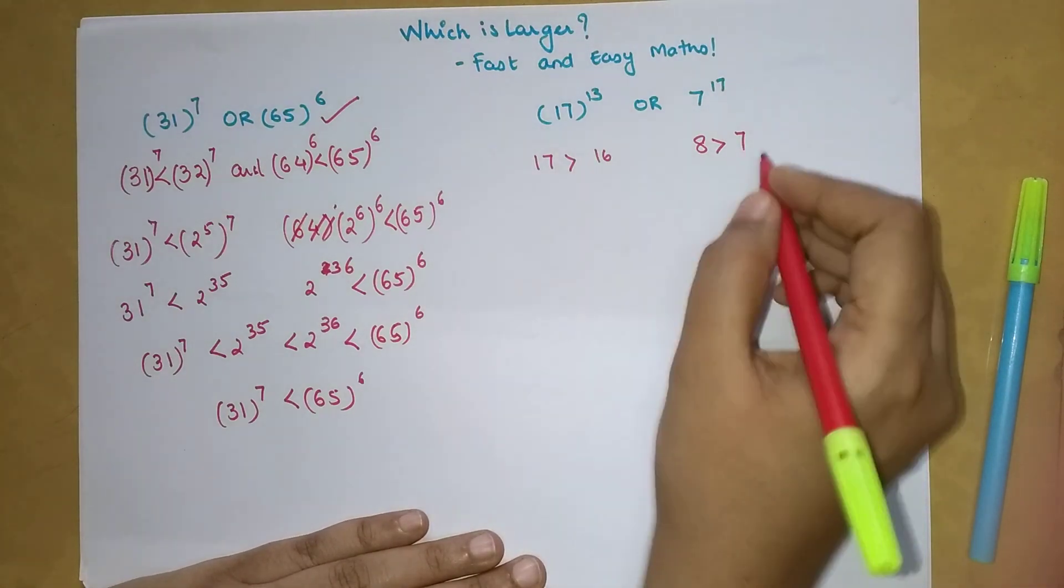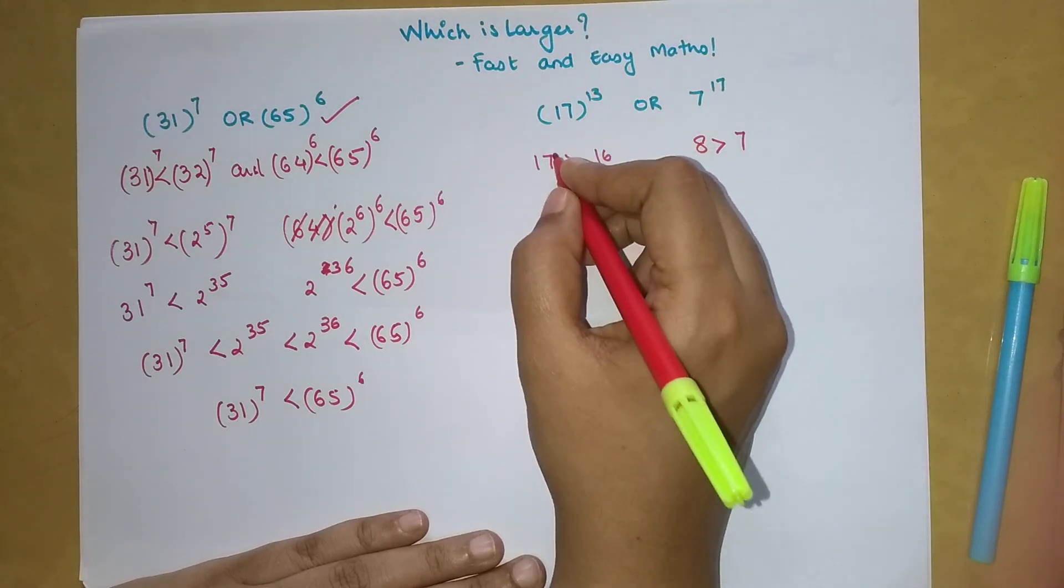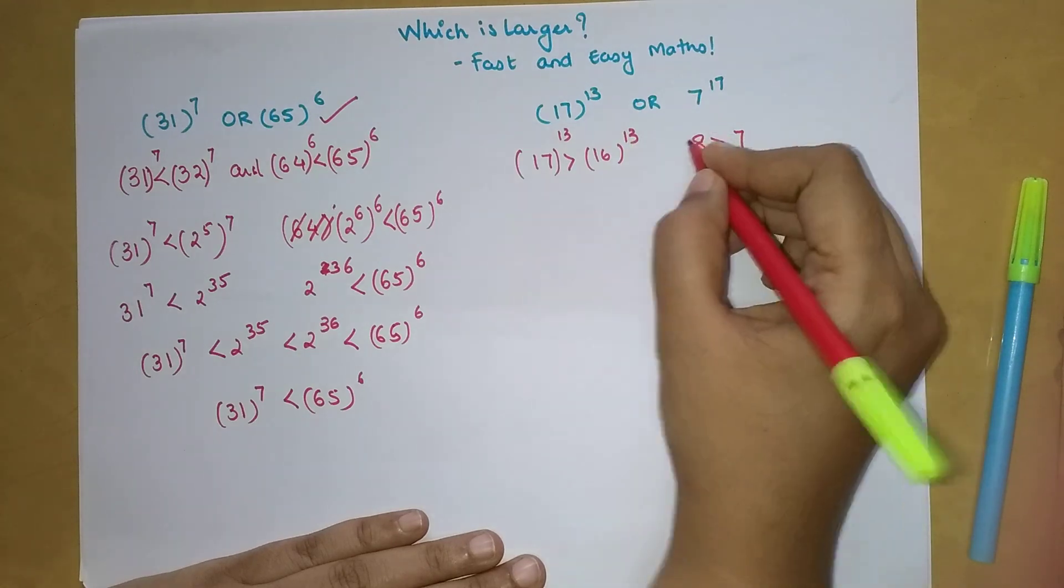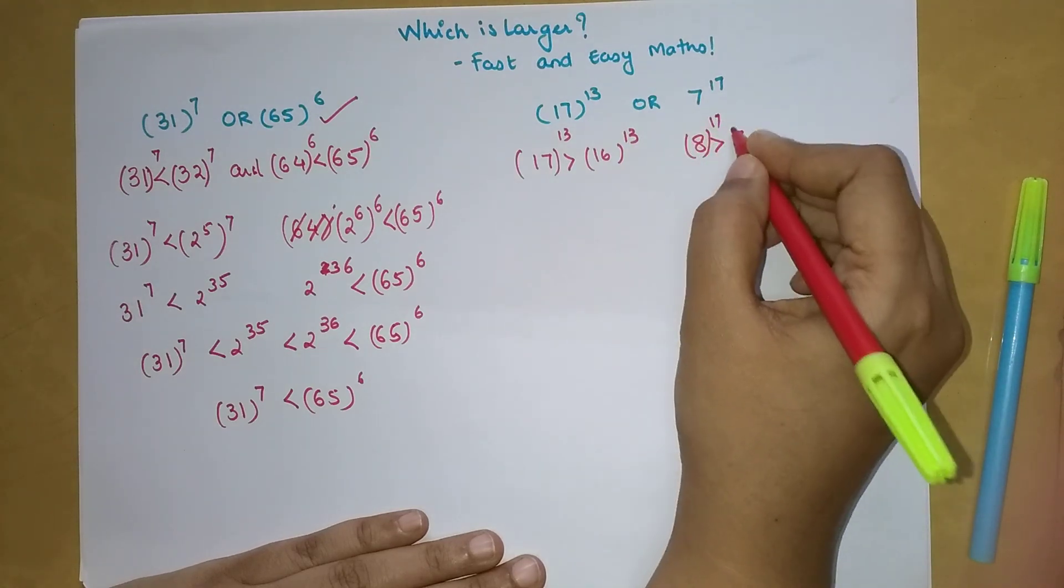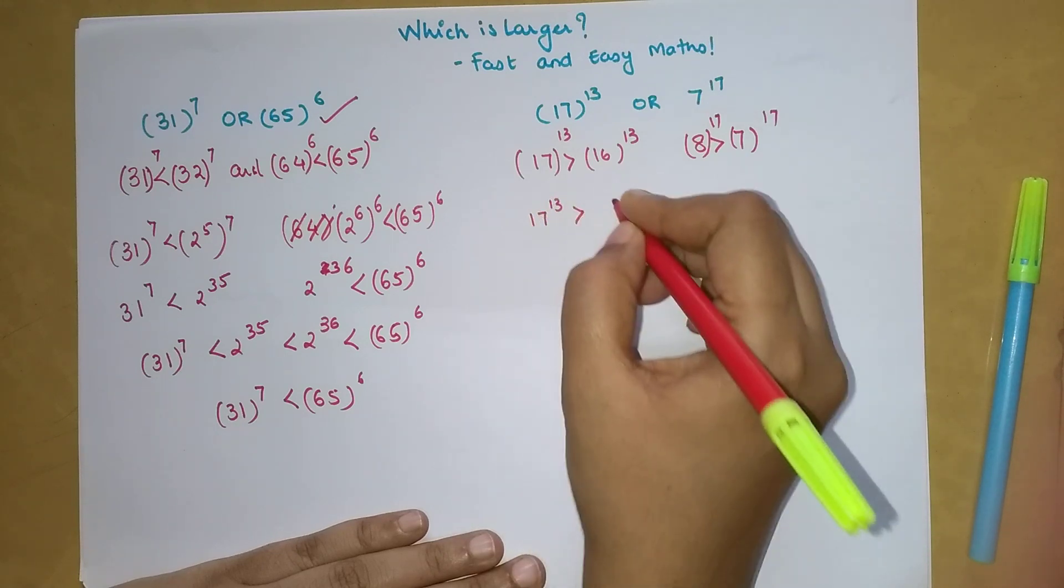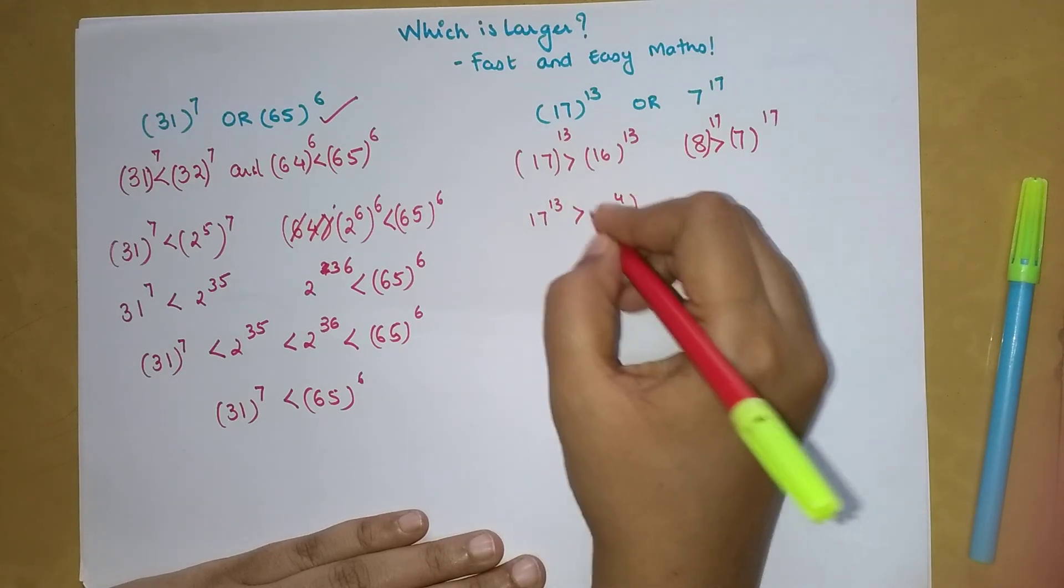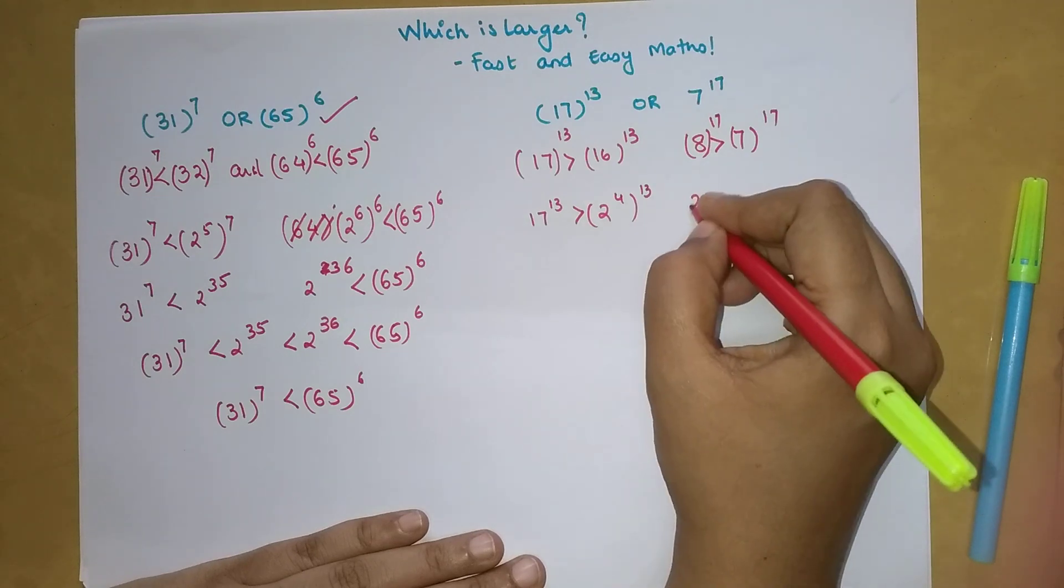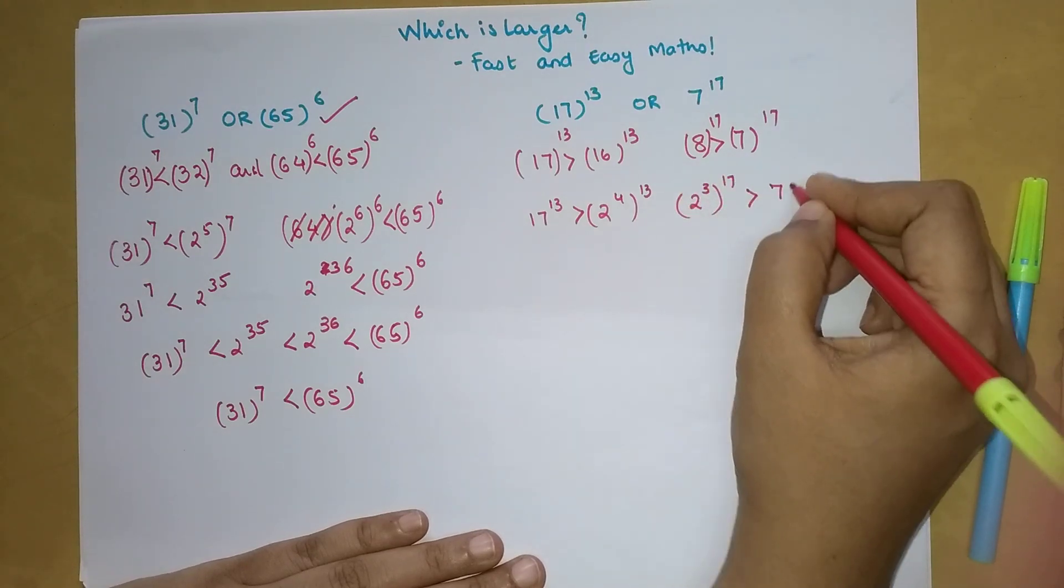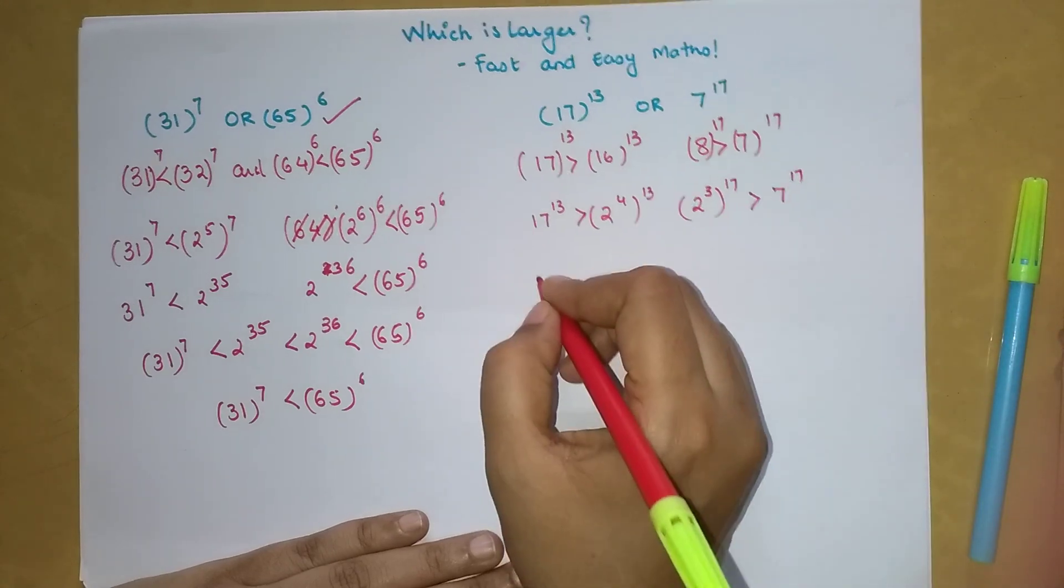Let's put the indices first. We have 17 raised to 13 greater than 2 raised to 4 the whole raised to 13, and this is 2 raised to 3 the whole raised to 17, which is still greater than 7 raised to 17.